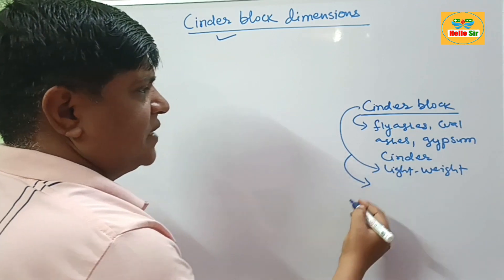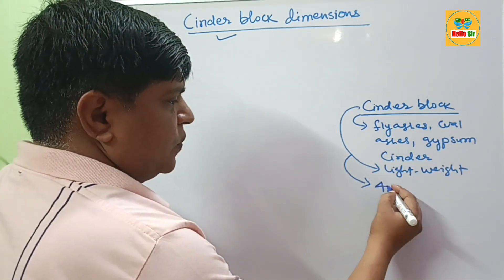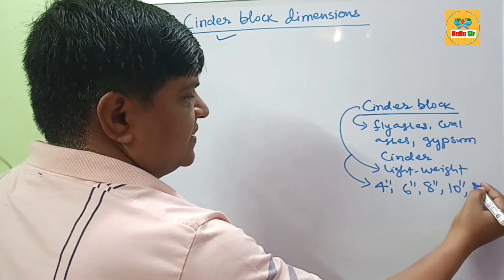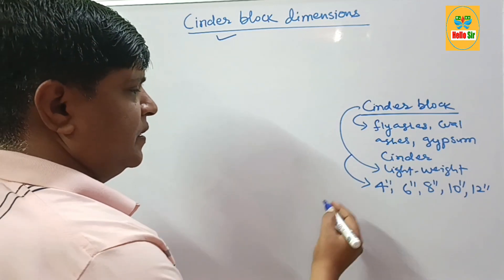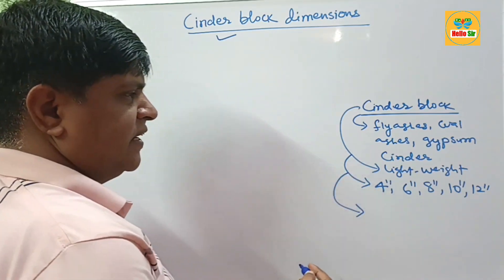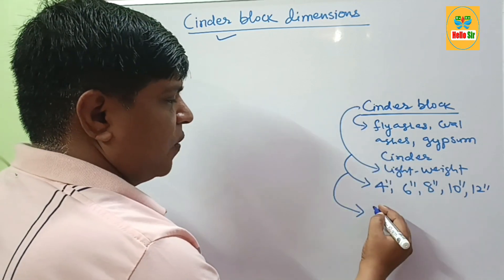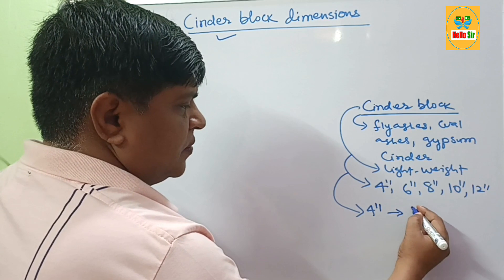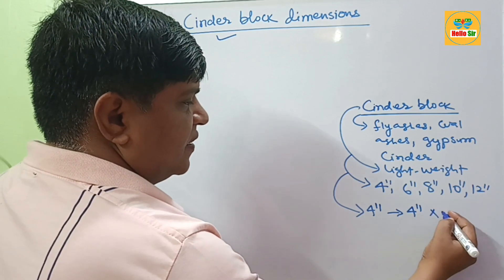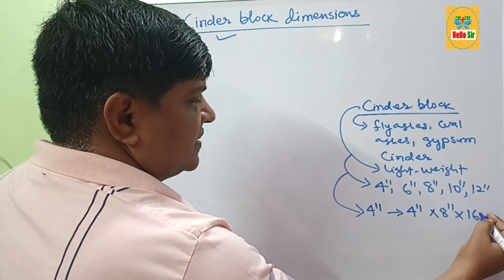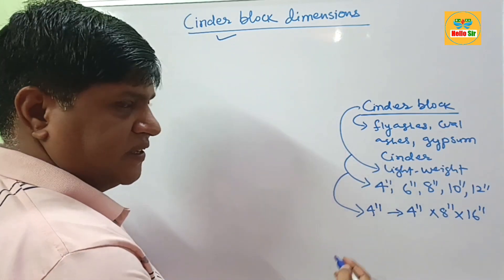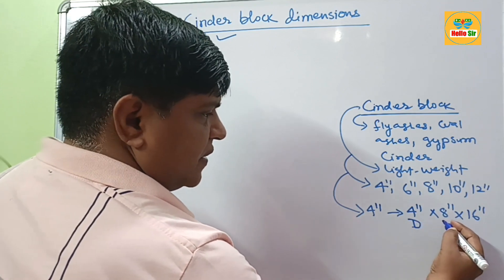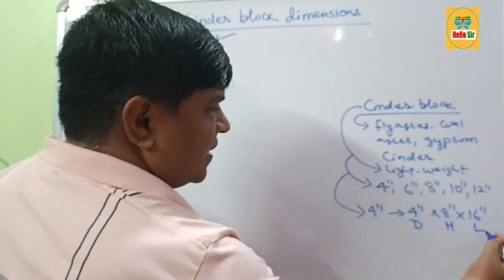There are various sizes of Cinder Block: 4-inch, 6-inch, 8-inch, 10-inch, and 12-inch thick. To briefly understand, we take one dimension of Cinder Block. A 4-inch Cinder Block means 4-inches thick, 8-inches in height, and 16-inches in length. This dimension refers to depth/thickness, height, and length respectively.